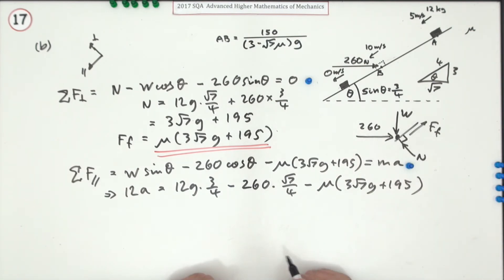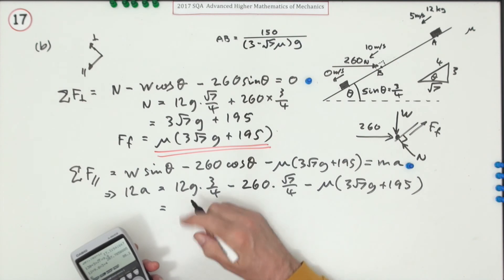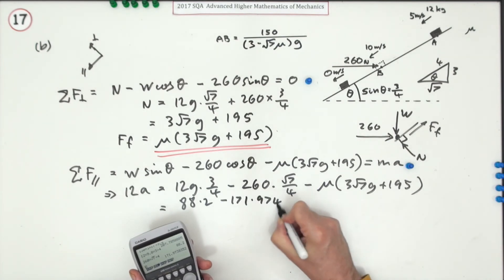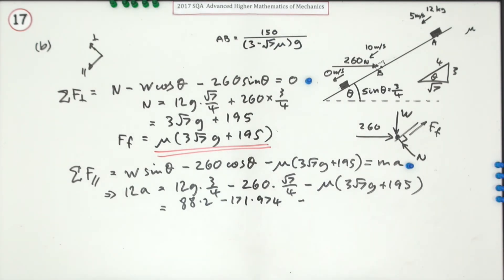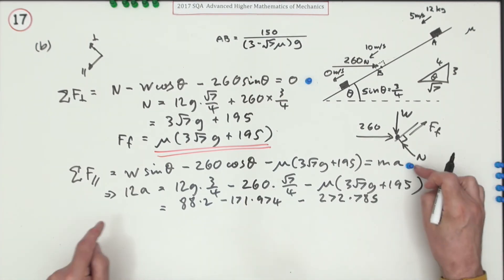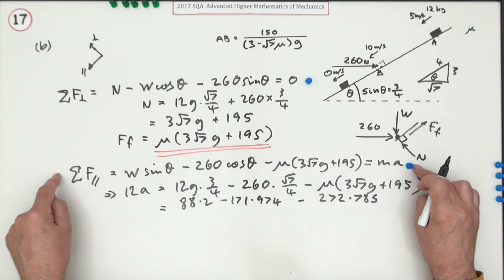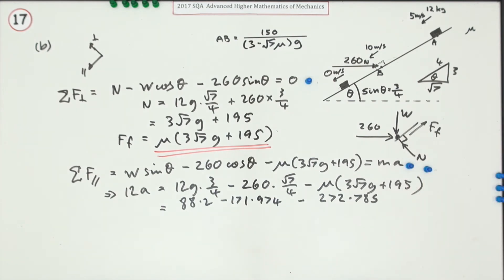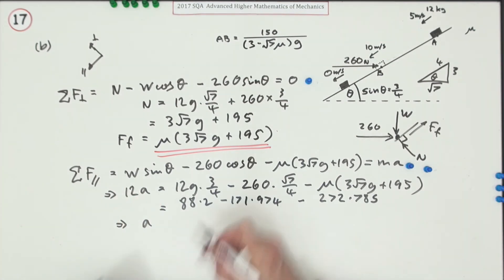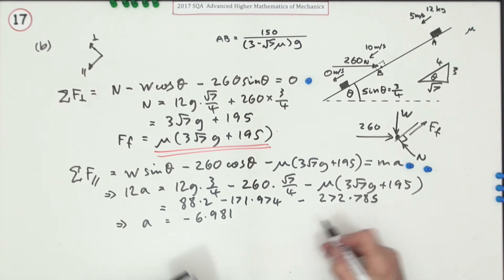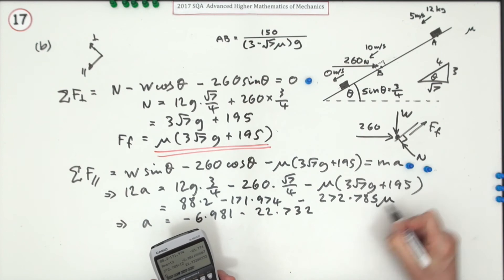Since we're finding μ to two significant figures, I'll now substitute decimal values: 12a = 88.2 − 171.974 − μ(272.785 + 195) ... giving 12a = −6.981 × ... − 22.732μ approximately. Dividing by 12 gives a = −6.981 − 22.732μ.